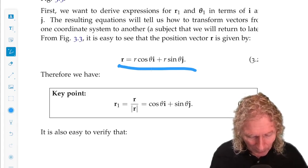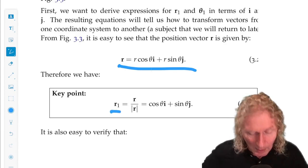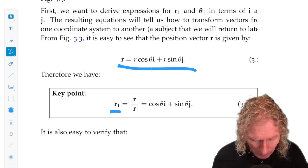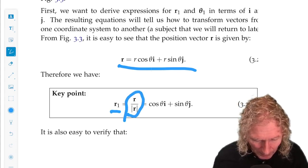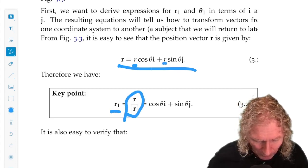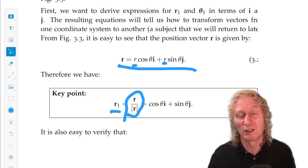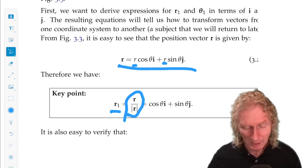So then a unit vector would be position vector r divided by its magnitude. That would just divide away the r's above, and we have cosine theta i plus sine theta j. And that's a vector of unit magnitude. In fact, you can compute its magnitude and check that.